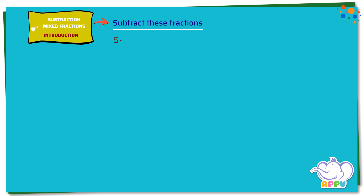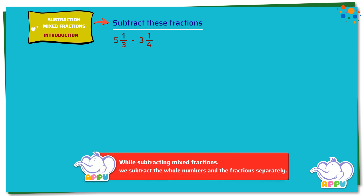5 and 1/3 minus 3 and 1/4. We subtract the whole numbers first. 5 minus 3 equals 2. Then we subtract the fractions: 1/3 minus 1/4. We see that the denominators are not the same for both the fractions.